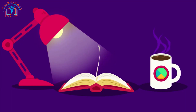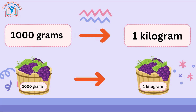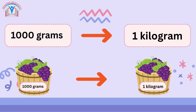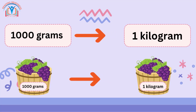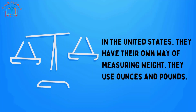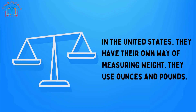Let's make things even simpler — there are 1,000 grams in one kilogram. So if you have 1,000 grams of grapes, you have one kilogram of grapes. Now let's hop over to the U.S. customary system. In the United States, they have their own way of measuring weight.